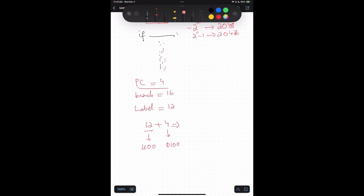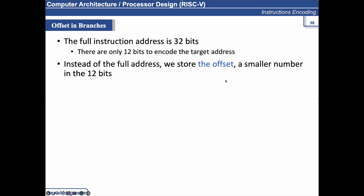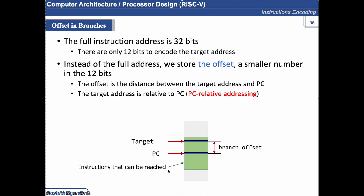Instead of storing the full address, we store the offset — a smaller number — in the 12-bit field. The offset is the distance between the target address and the PC. This is what is referred to as PC-relative addressing. The reachable range (the green area) is increased by storing only the branch offset rather than the absolute address.